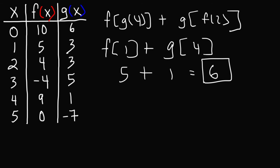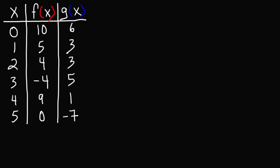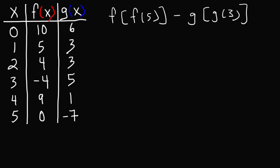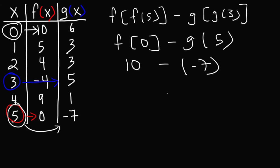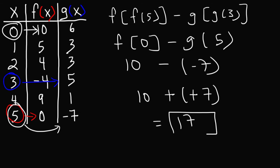Let's work on one more: f of f of 5 minus g of g of 3. When x is 5, f has a value of 0. When x is 3, g has a value of 5. Now f of 0: when x is 0, f has a value of 10. And g of 5: when x is 5, g has a value of negative 7. So it's 10 minus negative 7, which becomes 10 plus 7, equal to 17. So now you know how to evaluate composite functions using a table.